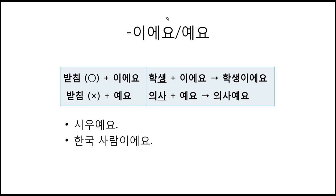First, 이에요 and 예요. Here it shows 받침 — an ending consonant. When there is a 받침 in the last syllable of the previous noun, 이에요 is attached. For example, 학생 means 'student.' There is an ending consonant in the last syllable, so 이에요 is attached: 학생이에요 — I am a student, you are a student, or she is a student. When there is no ending consonant, no 받침, 예요 is attached. For example: 의사예요. There is no ending consonant, so just 예요 is attached.